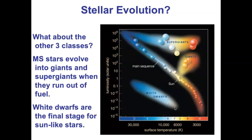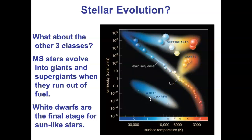A star spends 90% of its life burning hydrogen, sitting on the main sequence. That last 10% is when the star starts to die because it runs out of hydrogen fuel. When that main sequence star starts running out of fuel, it transforms and becomes a red giant, a supergiant, or eventually a white dwarf, and then it dies. The mass of the star also determines how it evolves as it moves toward dying.